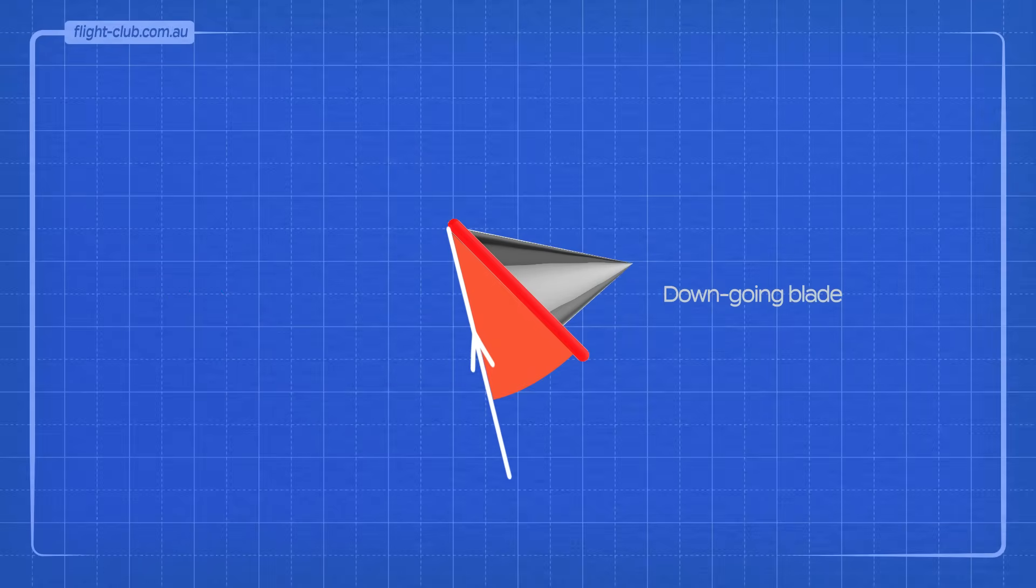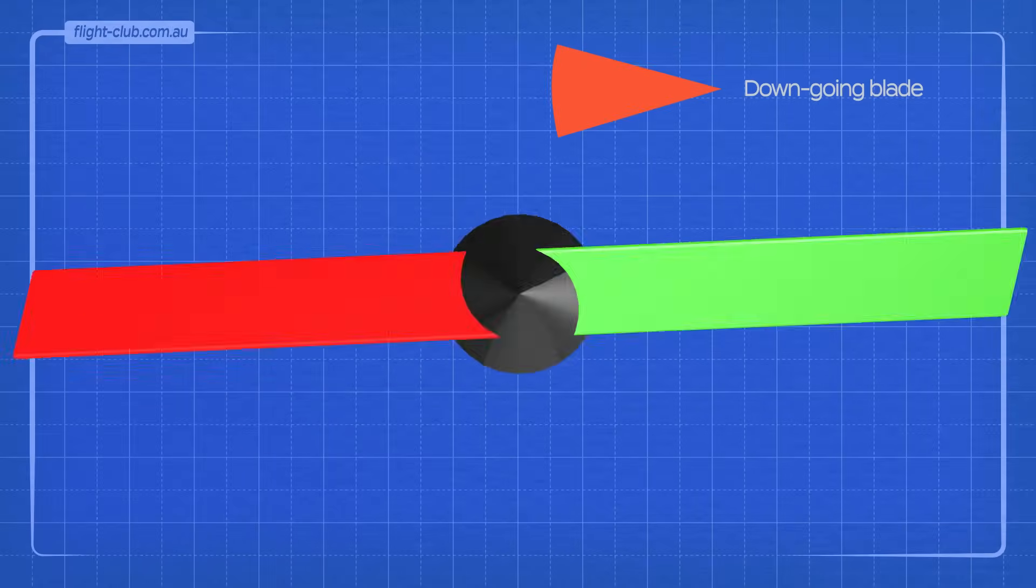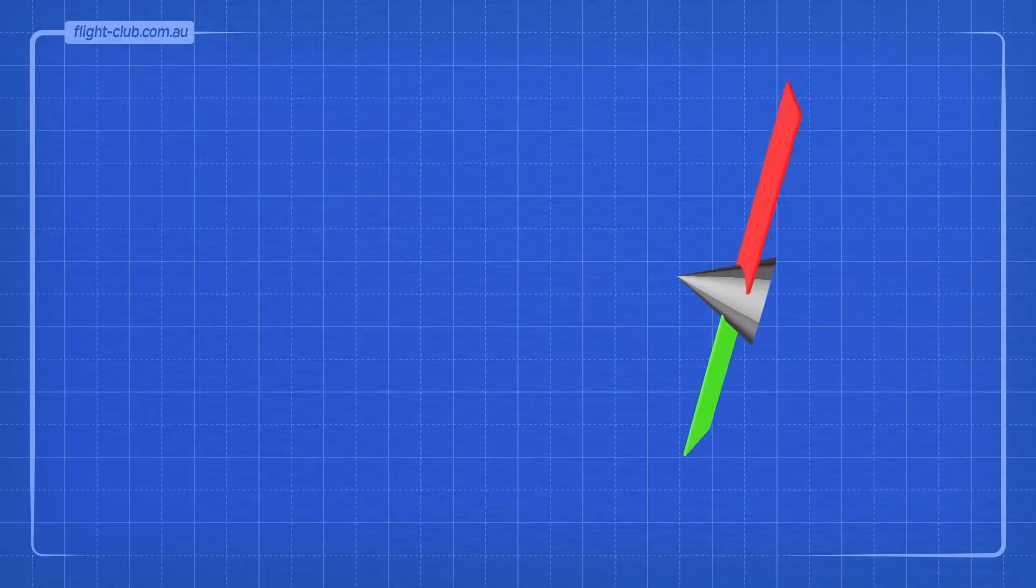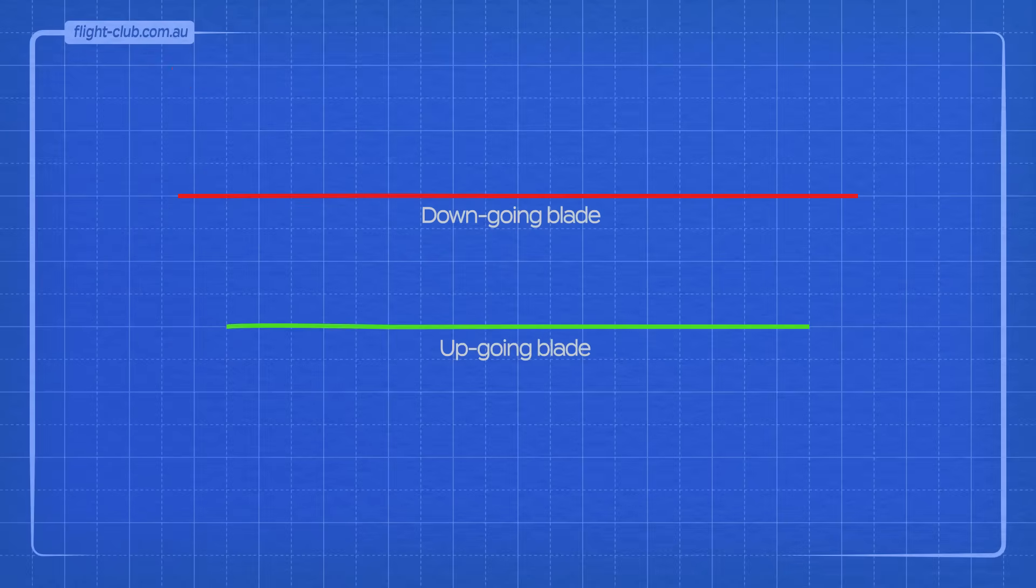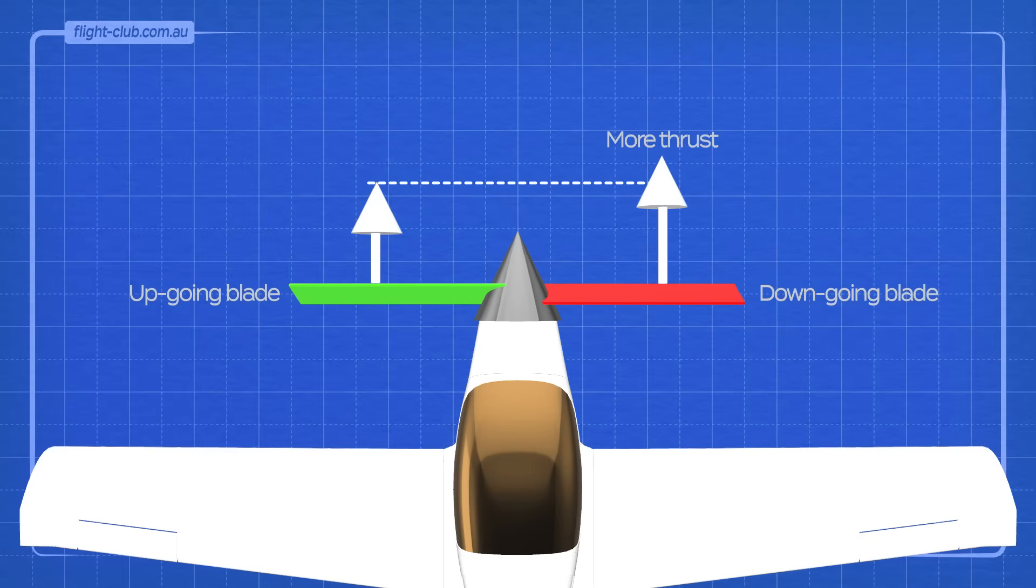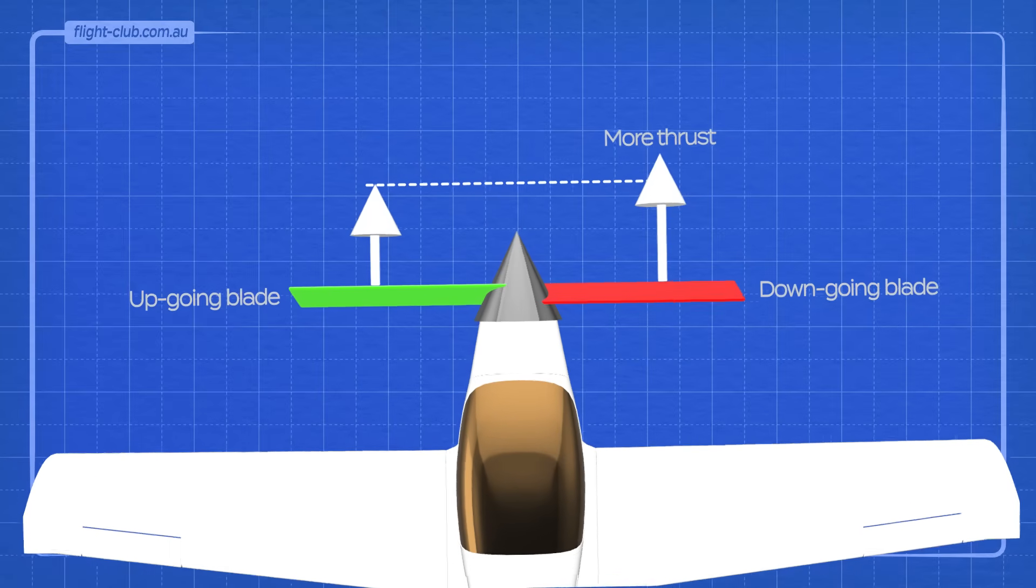The down-going blade has a greater angle of attack than the up-going blade. In addition to this, the down-going blade travels further and therefore faster through the air than the up-going blade. These two effects combined cause the down-going blade to produce more thrust than the up-going blade and cause the aeroplane to yaw to the left.